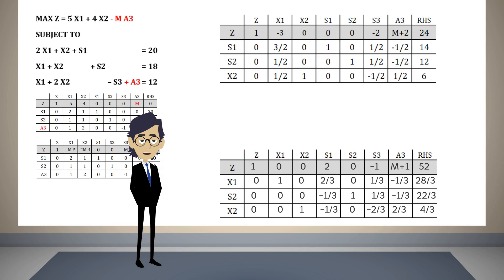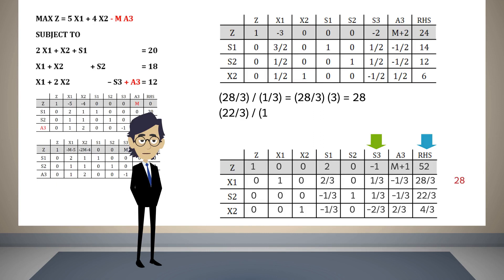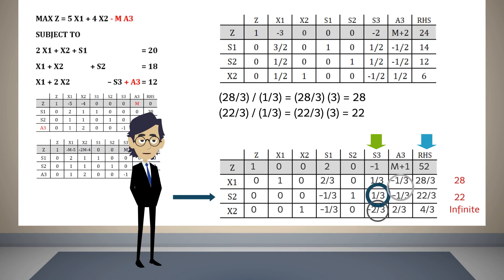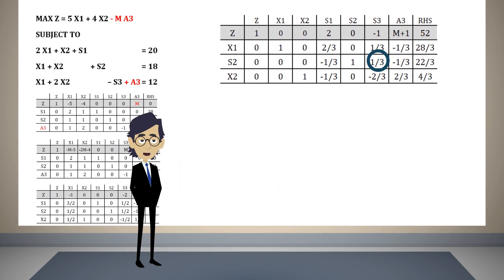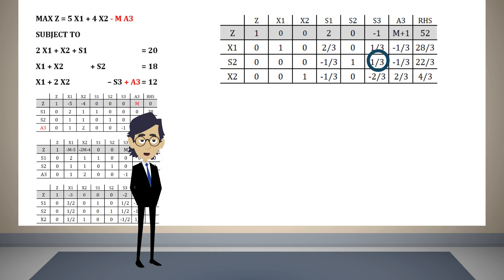We have completed another iteration, but there are still negative numbers in the objective function row. We divide the right-hand side column by the s3 column. Dividing 28/3 by 1/3 is equivalent to multiplying by 3, and 22/3 divided by 1/3 is also equivalent to multiplying by 3. Since the last number in the s3 column is negative, s3 can grow to infinity, so the leaving variable is s2.